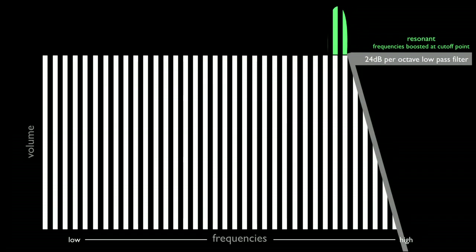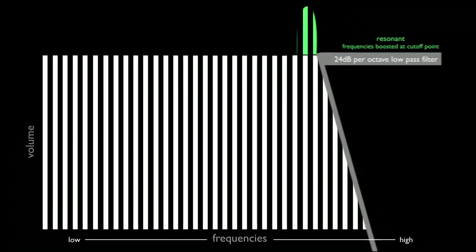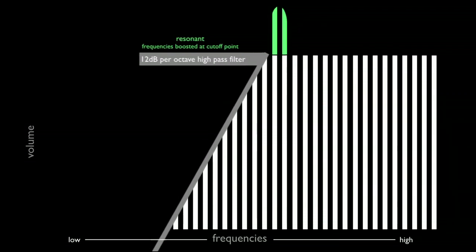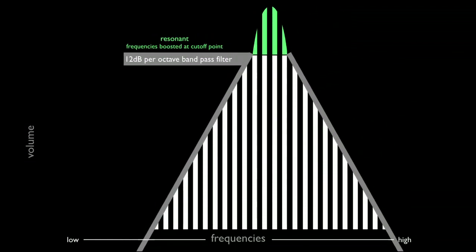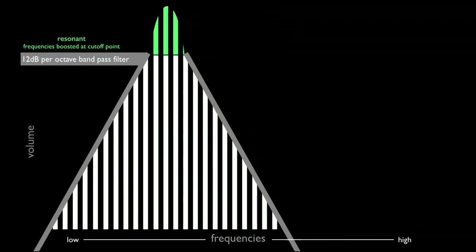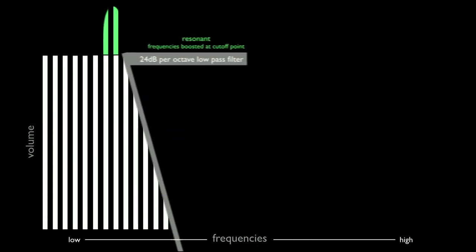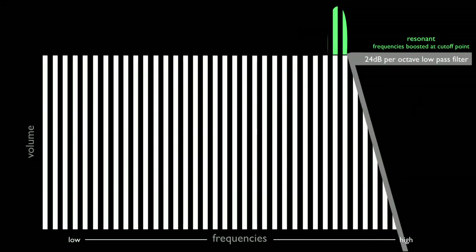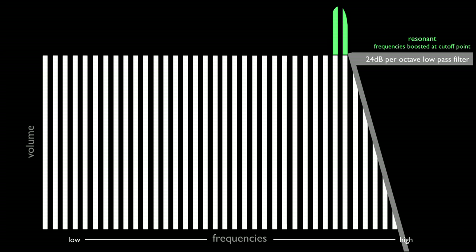Resonance is an effect where the frequencies at the cutoff point of the filter are amplified. This results in a change of timbre. Different filter types and filter slopes result in different sounding resonance. When the cutoff point is varied by control voltage, this frequency boost moves through the frequencies present along with the cutoff point.